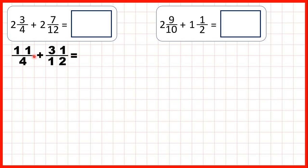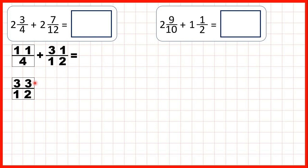So now we have improper fractions, but to add fractions we need the denominators to be the same. So we need to find an equivalent fraction to 11 quarters which has a denominator of 12. That's 33 twelfths, because to find equivalent fractions we use multiplication. 4 times 3 is 12, and what we do to the denominator we do to the numerator as well, and 11 times 3 is 33.